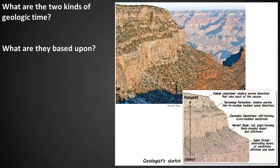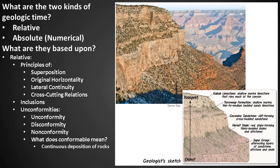What are the two kinds of geologic time? Relative and absolute, or numerical. Based on your reading material, what is relative time based upon? Relative time is based upon the principles of superposition, original horizontality, lateral continuity, and cross-cutting relations. It's also based on inclusions and unconformities, which include the angular unconformity, the disconformity, and the nonconformity. Conformity means the continuous deposition of rocks.